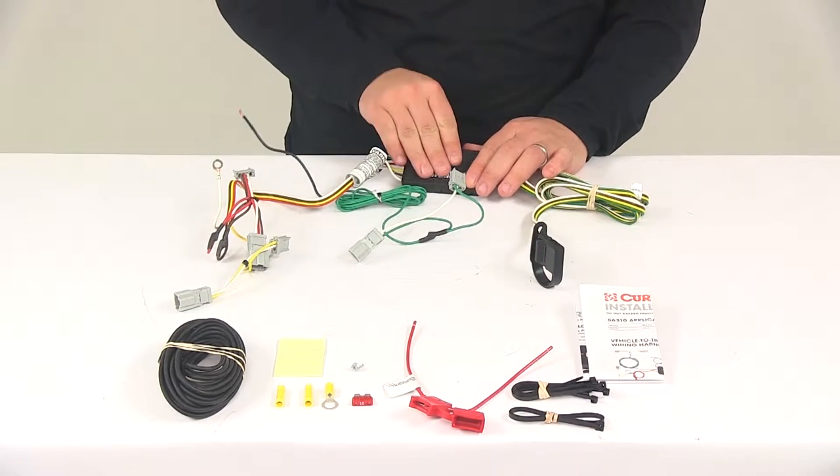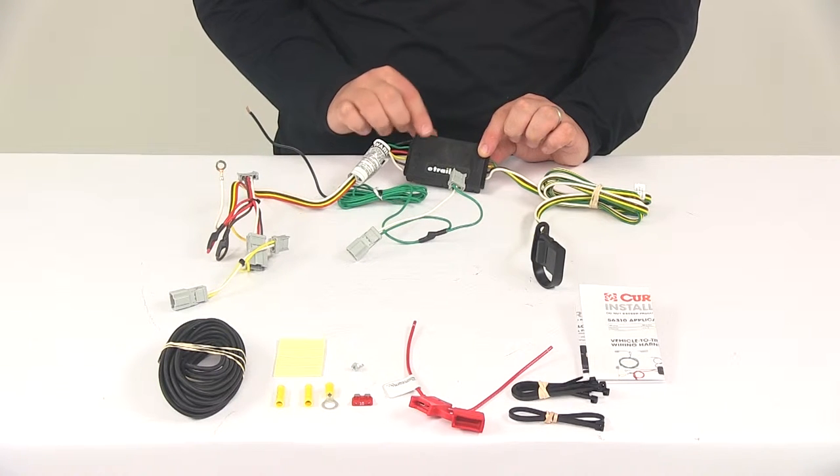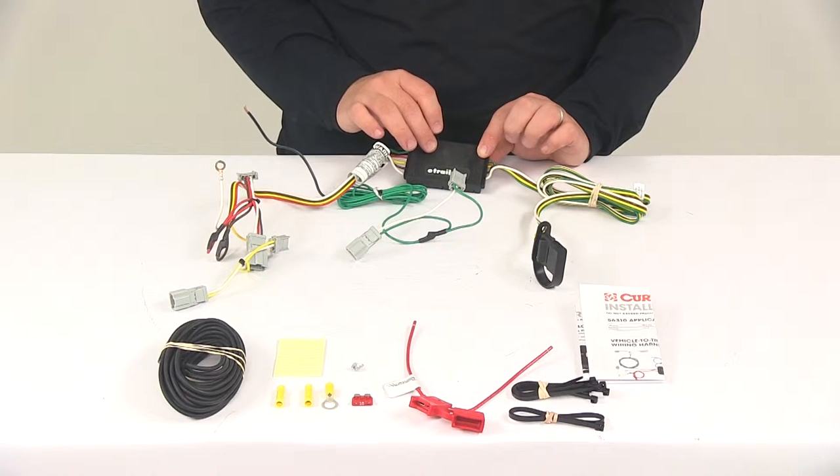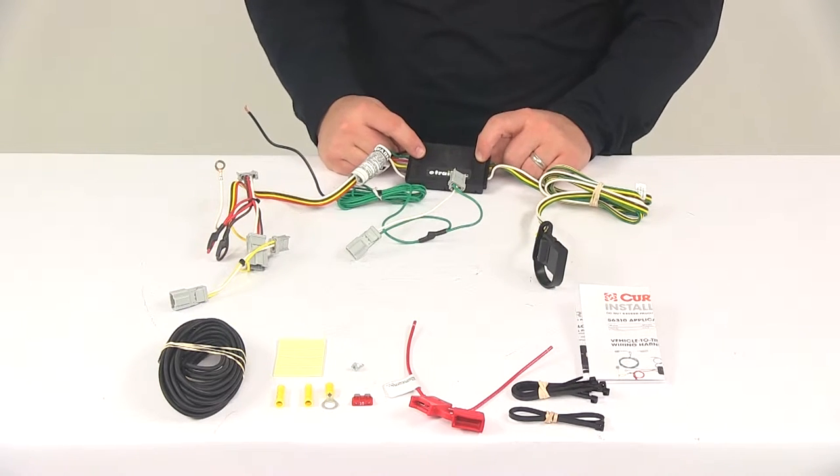It also includes a taillight converter. This ensures that your vehicle's wiring matches out of your trailers. This connects directly to the battery through the wiring to avoid overloading the vehicle's electrical system.